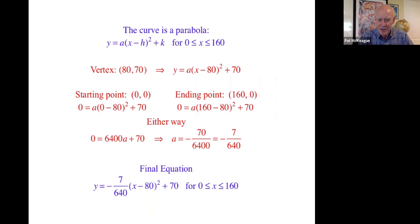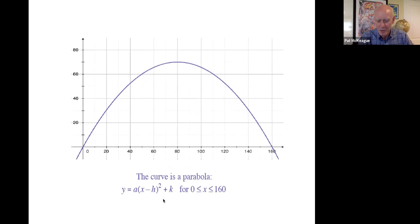So if we take 70 feet as his height and 160 feet as his distance, this is the information that we use to get the equation down at the bottom here of his path. So now if we take that equation and we graph it, we get something that looks like that.